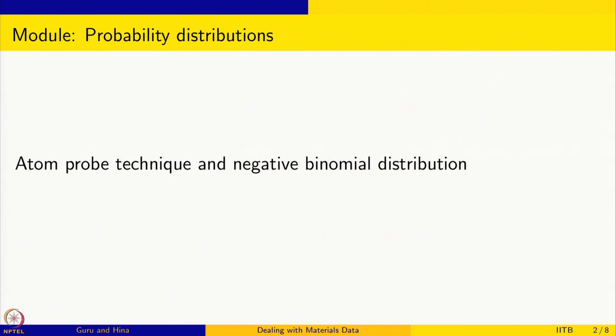In the last session we discussed Bernoulli trials and binomial distribution. We were talking about a random AB alloy — a binary alloy — and randomly picking atoms from the alloy and deciding whether it is B or not, and how that gives information about alloy composition. There are actually microscopy techniques which do similar things. This session is a continuation, and we are going to talk about the atom probe technique and how that leads to negative binomial distribution.